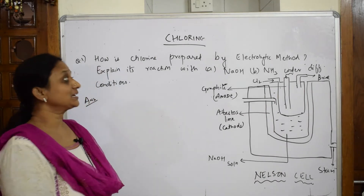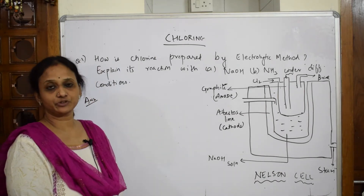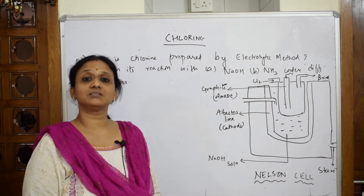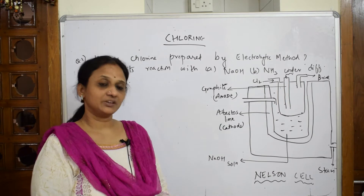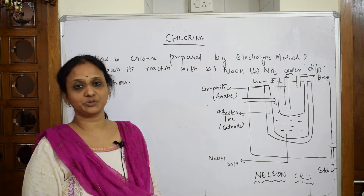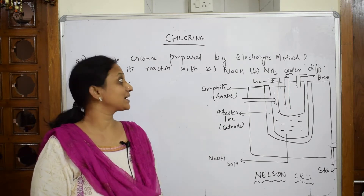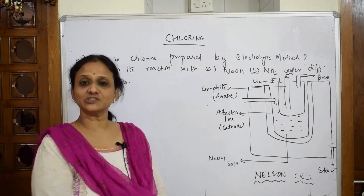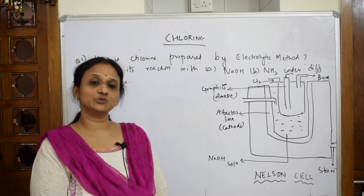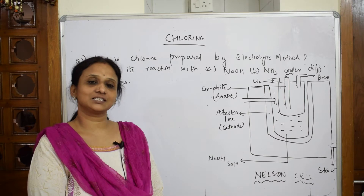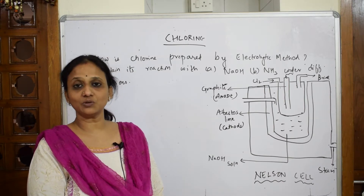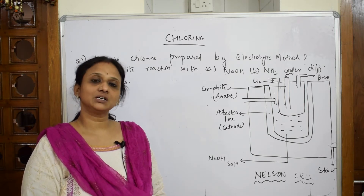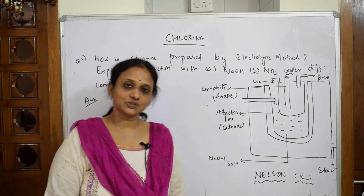Let's come back and start with the chlorine element. We have already seen the general trends in physical and chemical properties, reaction with oxygen, reaction with halides, reaction with hydrogen, and formation of interhalogen compounds. Now let's start with chlorine. I've already started explaining chlorine in the form of a question, so it's easy for you to write in the exam. The main concept is getting you acquainted with both the question and the answer.